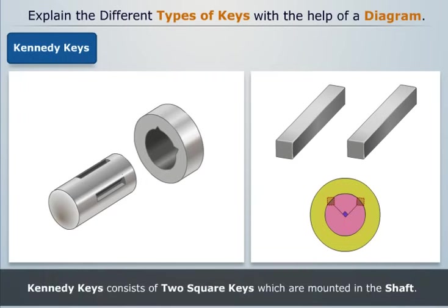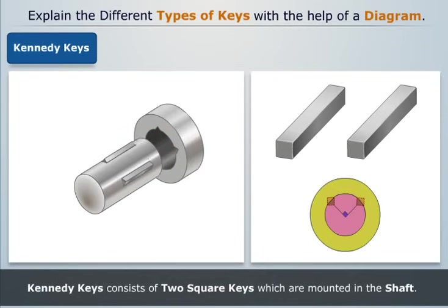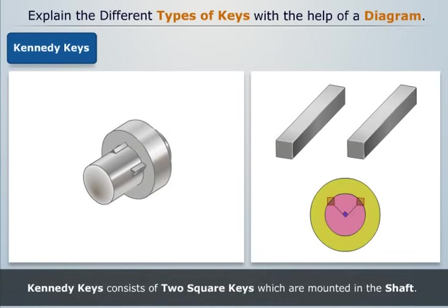Kennedy keys consist of two square keys which are mounted in the shaft. In this case, the hub is bored off the center, and the two keys force the hub and the shaft to a concentric position.